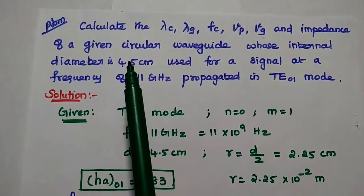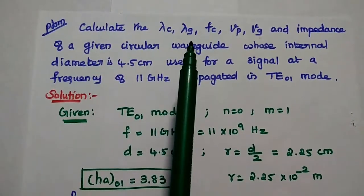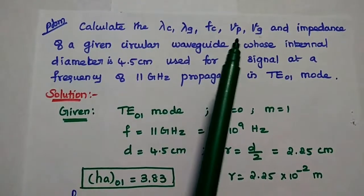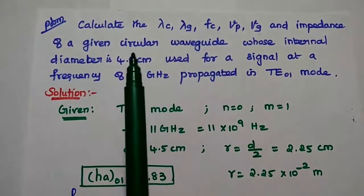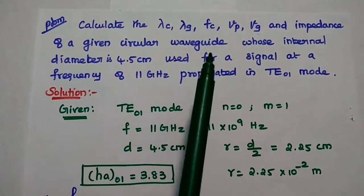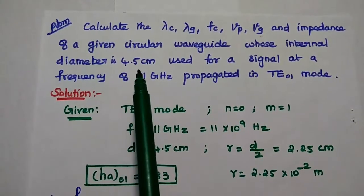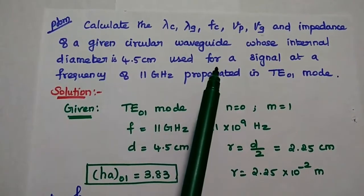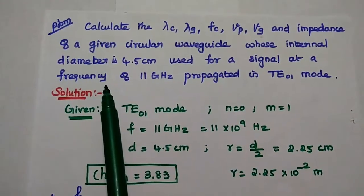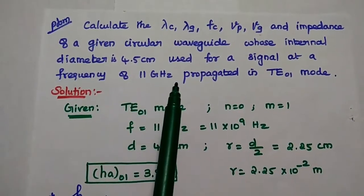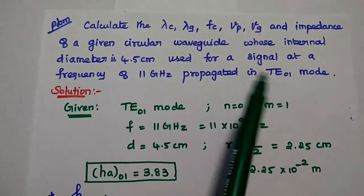Let's solve a problem. Calculate the cutoff wavelength, guided wavelength, cutoff frequency, phase velocity, group velocity, and impedance of a circular waveguide whose internal diameter is 4.5 cm, used for a signal at a frequency of 11 GHz propagated in TE01 mode.